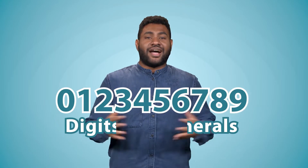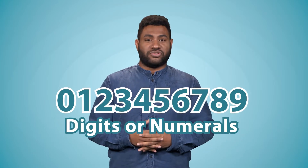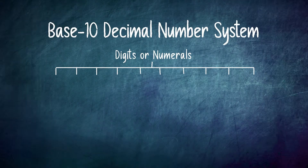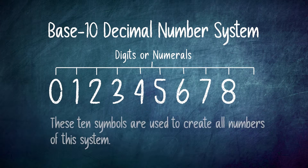Before we get to the classification of the number system, let me tell you quickly about what digits or numerals are. The ten symbols that we have in our number system, starting from zero to nine, are digits or numerals. We follow the base-ten decimal number system, and these ten symbols are used to create all numbers of this system.